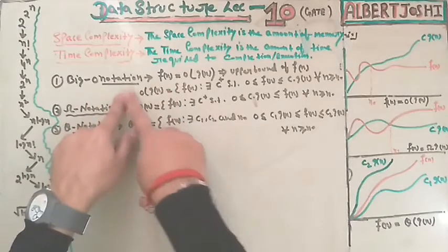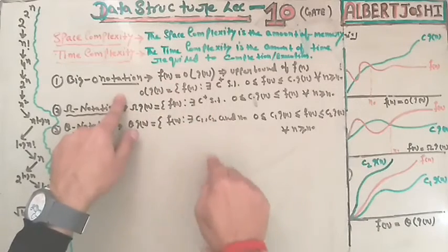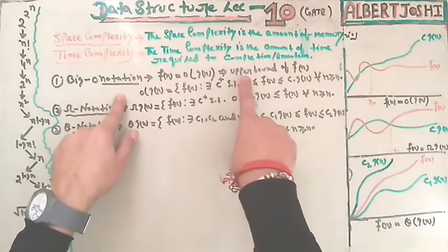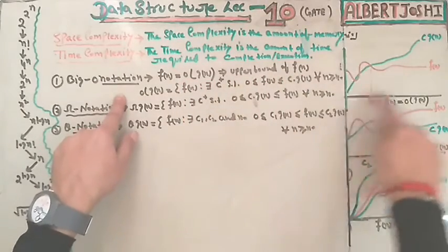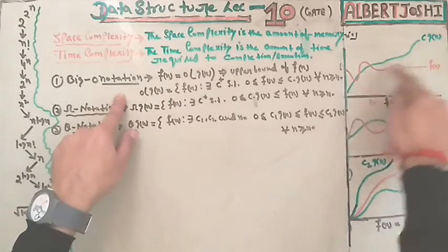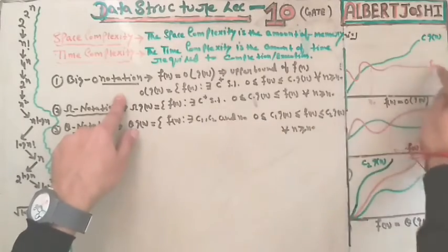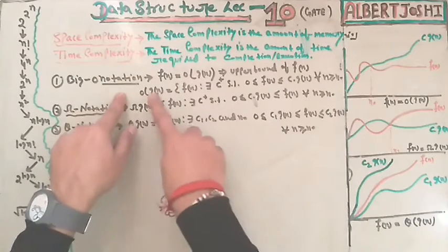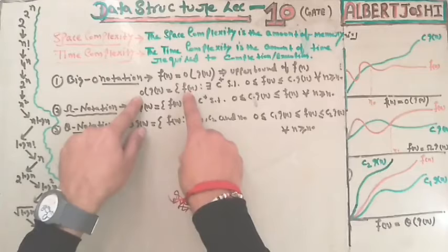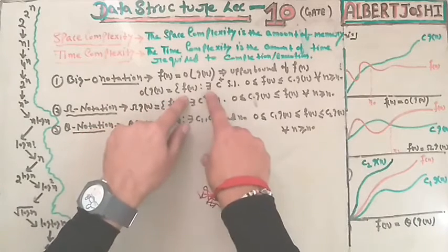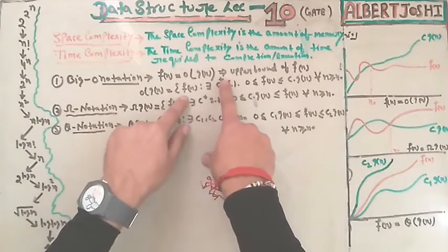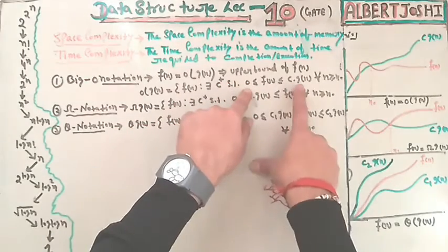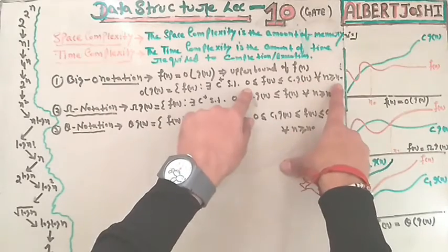Big O notation: f(n) = O(g(n)) is the upper bound of f(n). There exist two graphs — f(n) in red — and O(g(n)) = f(n) means there exists a positive constant c such that 0 ≤ f(n) ≤ c·g(n) for all n ≥ n₀. They check whether any upper bounded function exists for the time complexity of your code.